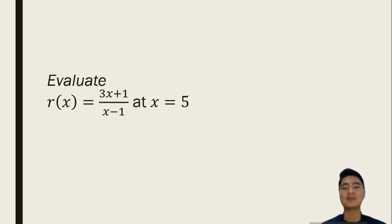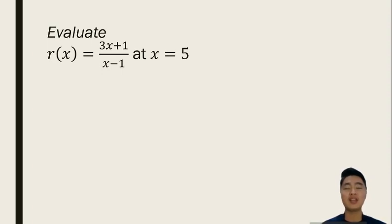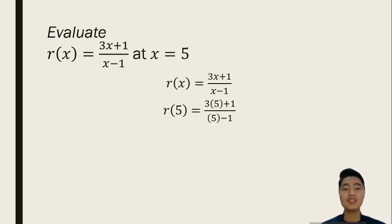Let's try another one. For instance, you have the function r of x equals 3x plus 1 over x minus 1 where x is equal to 5. Now, we are going to replace all the x here with 5. We will have r of 5 is equal to 3 times 5 plus 1 all over 5 minus 1. Remember, do the operations on the numerator first and then do the operations on the denominator. Do them separately.